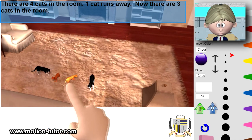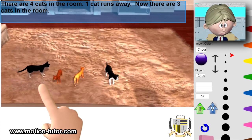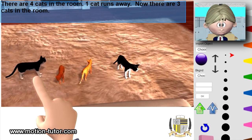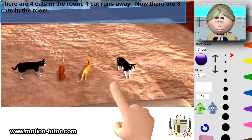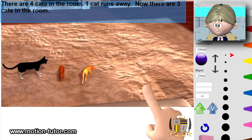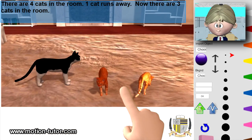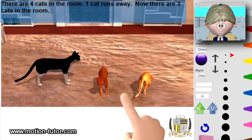So there are four cats in the room - one, two, three, four - four cats. And then one cat runs away. Now there are three cats in the room. So this is an example of subtraction.